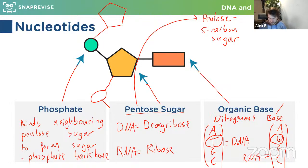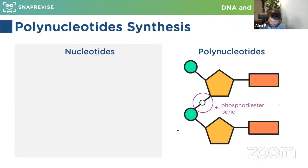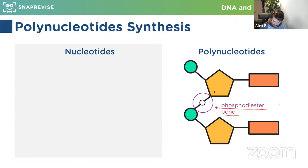Let's look at how we actually form a polynucleotide — joining two nucleotides together. The bond formed between them is known as a phosphodiester bond. It occurs between the pentose sugar and the phosphate group via a condensation reaction — that means we're removing water and forming a chemical bond. This happens many times in the formation of a polynucleotide, creating the sugar-phosphate backbone.